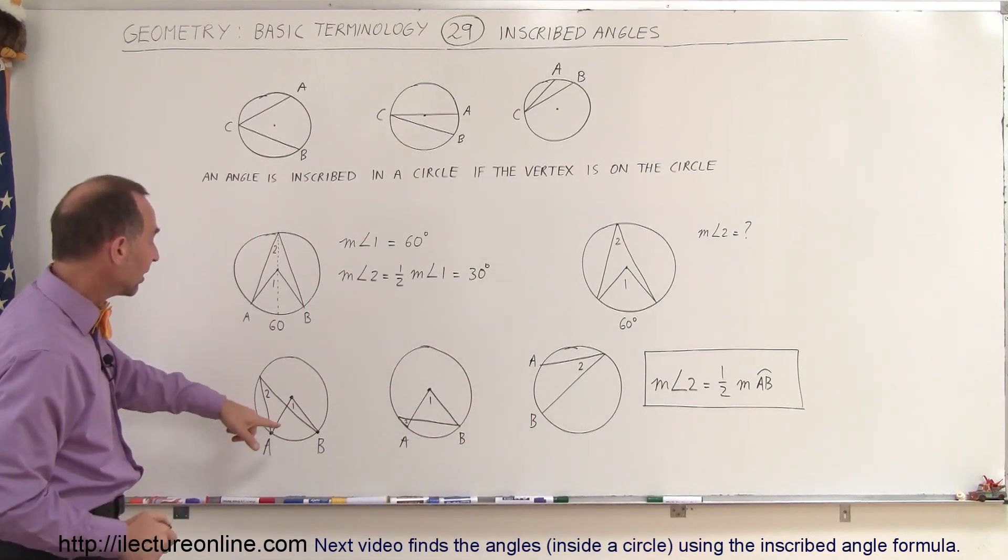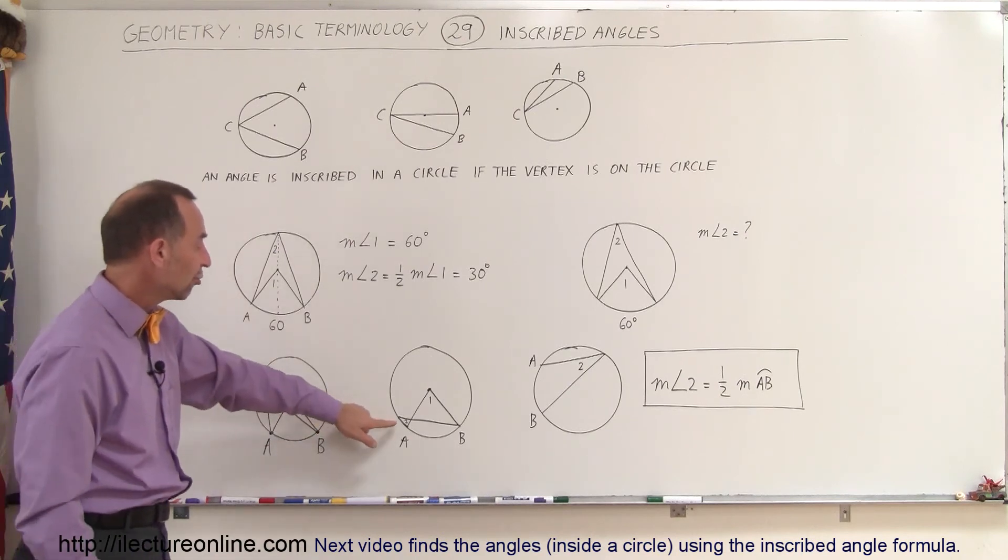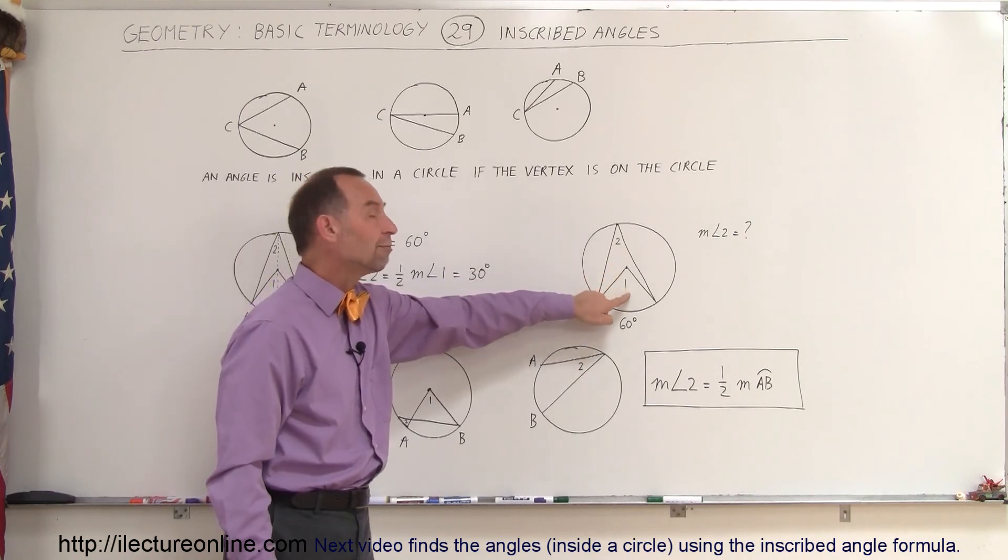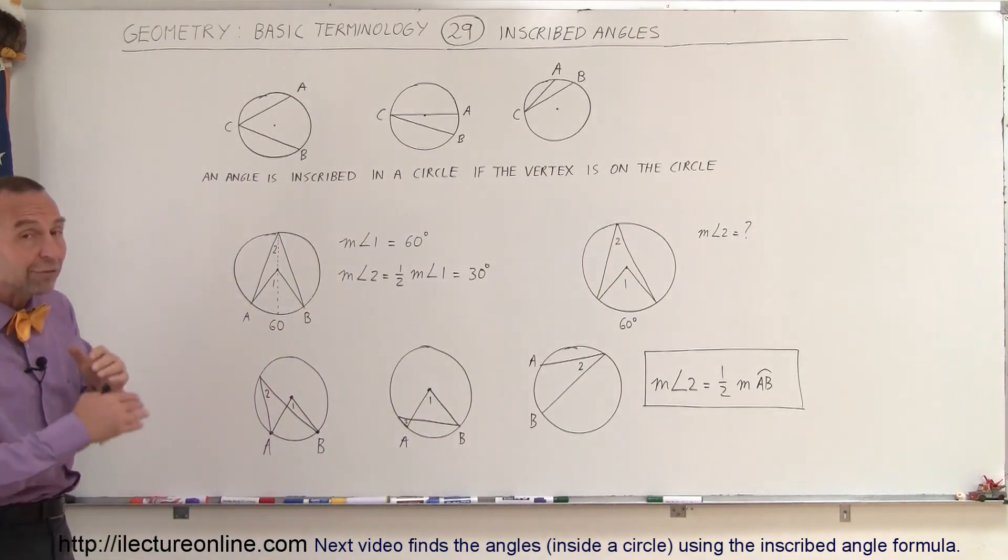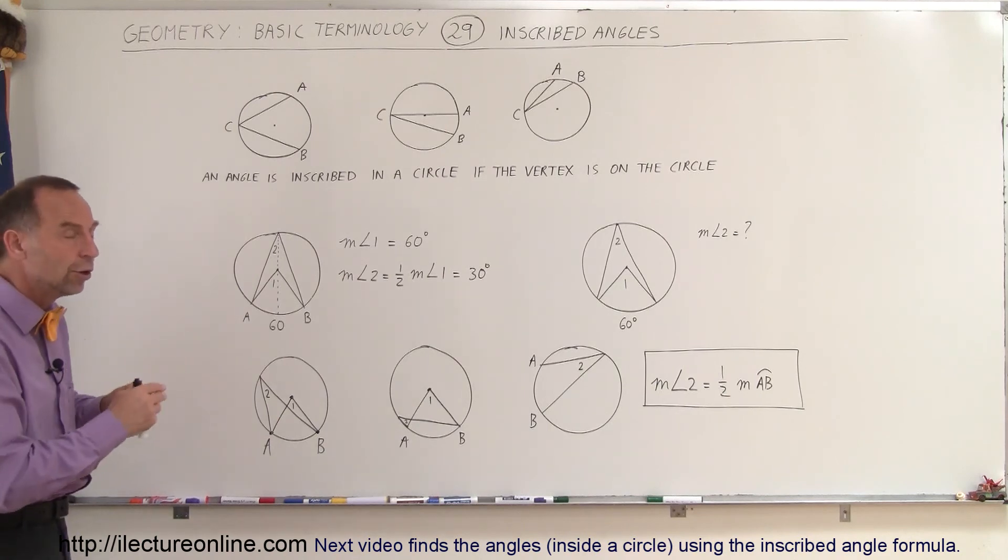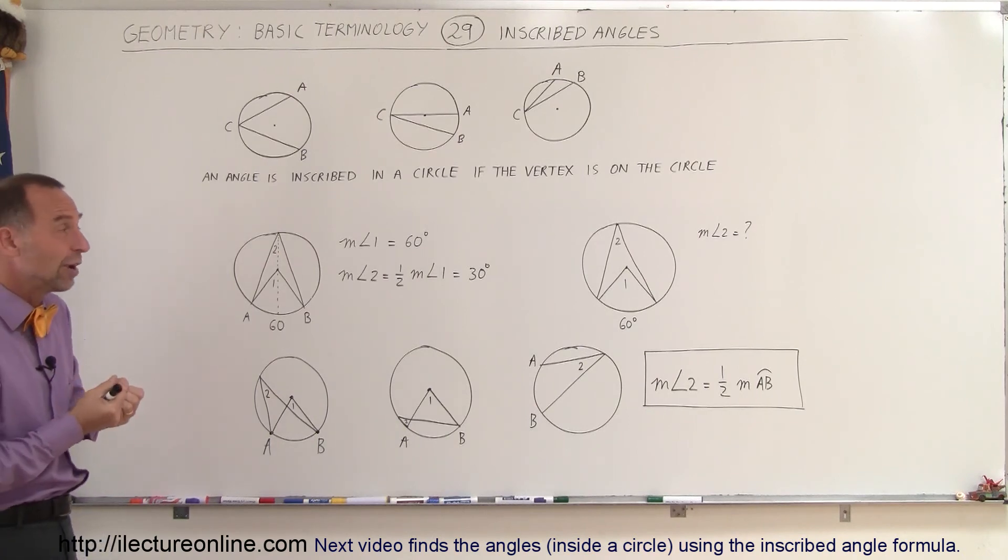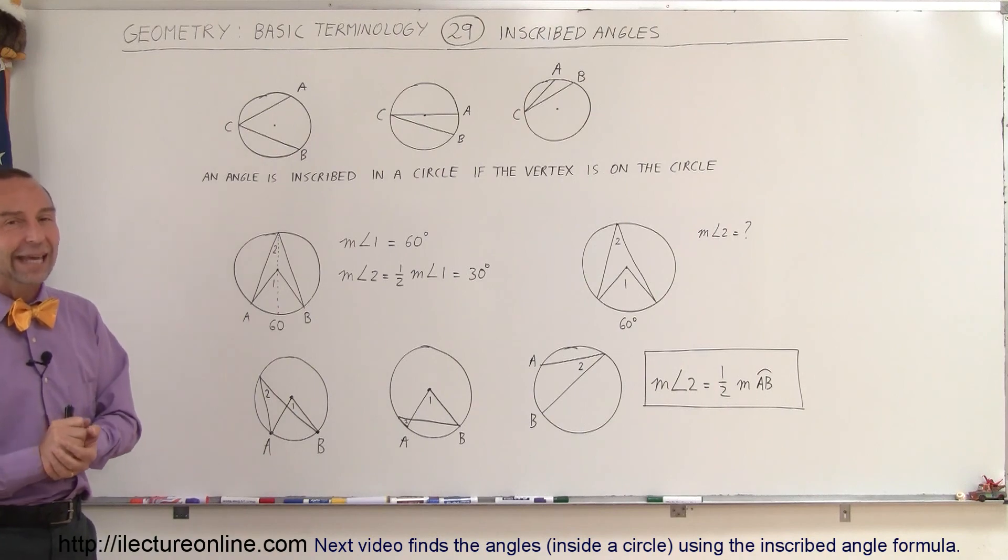In each of the cases, the measure of angle 2 will be half the measure of angle 1. And that's a very powerful theorem. We haven't proven it yet, we'll do that in a later video, but just knowing how to utilize that will make it very easy to find angles in situations that otherwise would be very difficult to find. And we'll show you an example of that in the next video. Thank you.